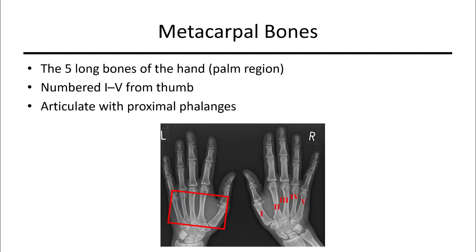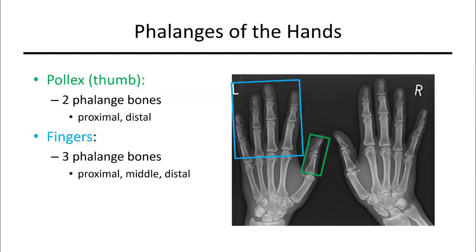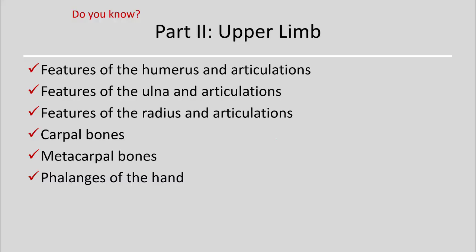The metacarpal bones are the bones of the palm, numbered by Roman numerals starting from the thumb toward the pinky. The phalanges total 14 — three on each finger and only two on the thumb. For the upper limb, you should know the features of the humerus, ulna, and radius and what they articulate with, be able to name the carpal bones, identify and name the metacarpal bones in proper order, and identify the phalanges of the hand.